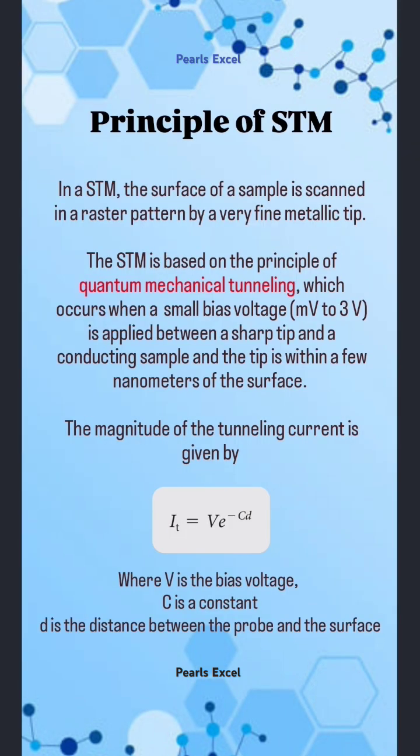Principle of the STM: In an STM, the surface of a sample is scanned in a raster pattern by a very fine metallic tip. The STM is based on the principle of quantum mechanical tunneling, which occurs when a small bias voltage is applied between a sharp tip and a conducting sample and the tip is within a few nanometers of the surface. The magnitude of the tunneling current is given by I = V·e^(−C·d).